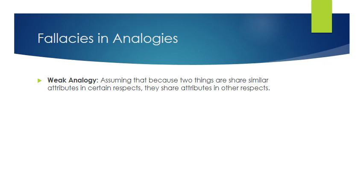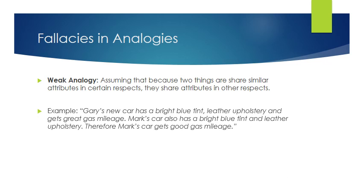The fallacy of weak analogy assumes that because two things share similar attributes in certain respects, they share attributes in other respects. For example: Gary's new car has a bright blue tint, leather upholstery, and great gas mileage; Mark's car also has a bright blue tint and leather upholstery; therefore Mark's car gets good gas mileage too. The similarities about color and upholstery probably have nothing to do with gas mileage.